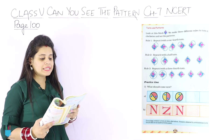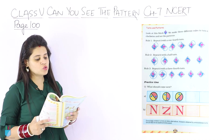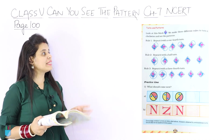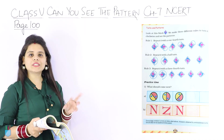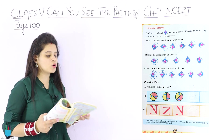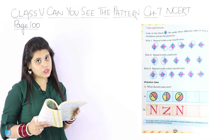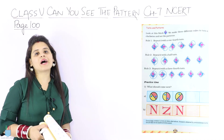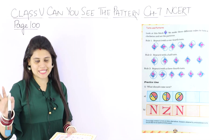Look at this block. We make three different rules to turn it clockwise and see the pattern. Three different rules will turn this block. Rule number 1 is: repeat it with a one-fourth turn. Every time that block has a one-fourth turn, it has changed every time.